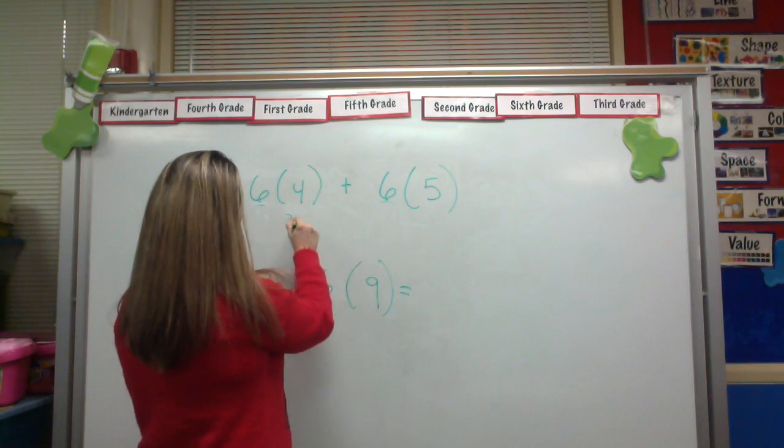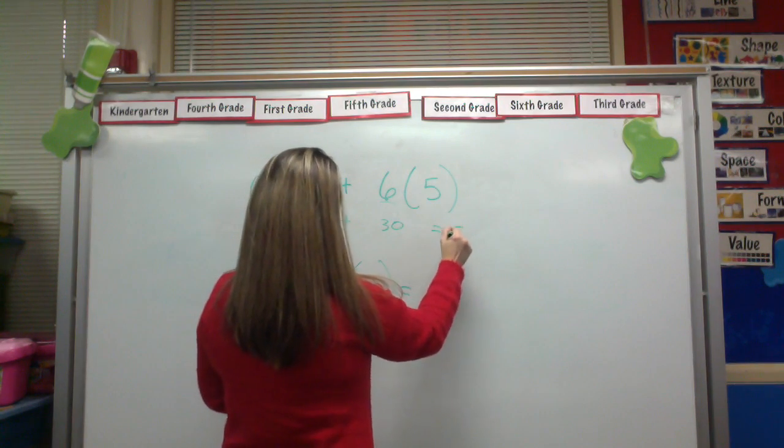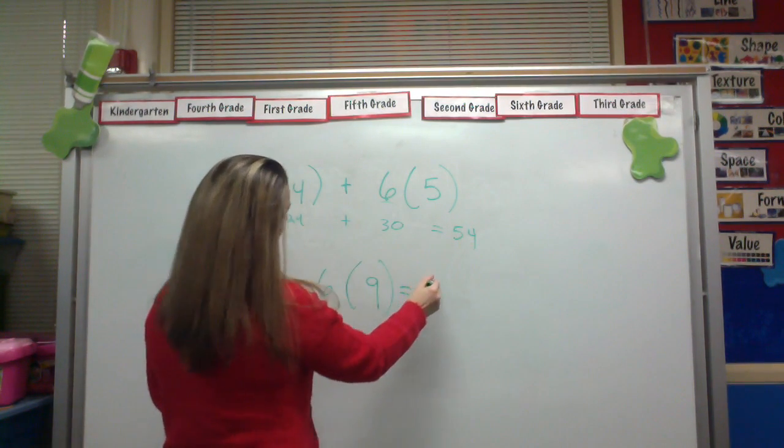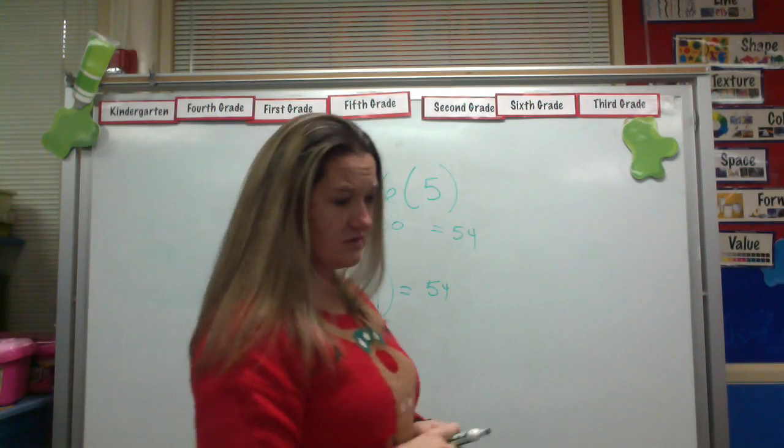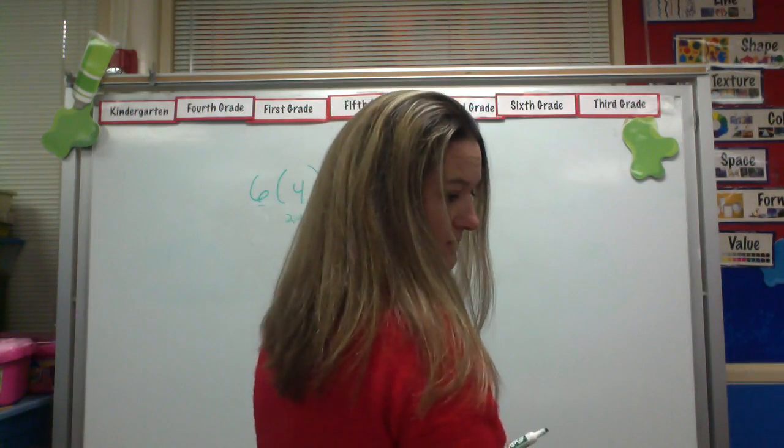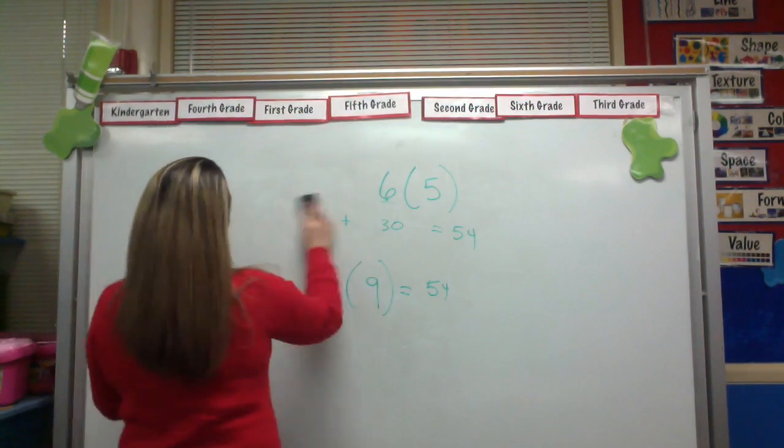6 times 4 is 24, plus 6 times 5 is 30. That's 54, well 6 times 9 is also 54. So you may see examples like, let me just copy one from the book.